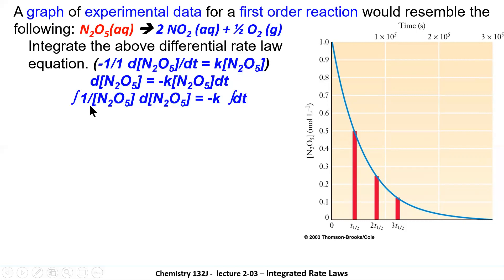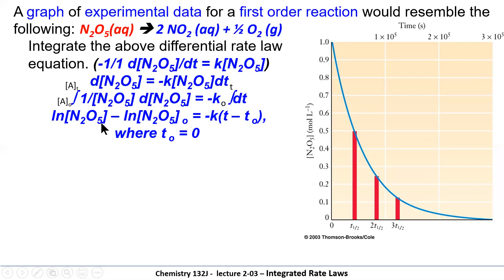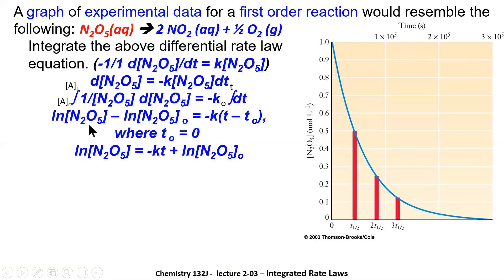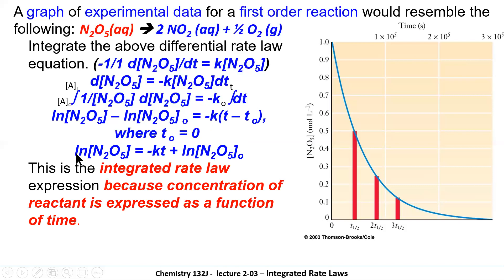We are now going to integrate that differentiated expression, integrating the concentration from any time to zero, and the other side from time T to time zero. When we do that, we get the natural log of [N₂O₅] minus the natural log of [N₂O₅]₀ equals minus K times (T − T₀), where T₀ equals zero. We then rearrange this equation by adding the ln of [N₂O₅]₀ to both sides, effectively moving that term to the right. This gives us the integrated rate expression.